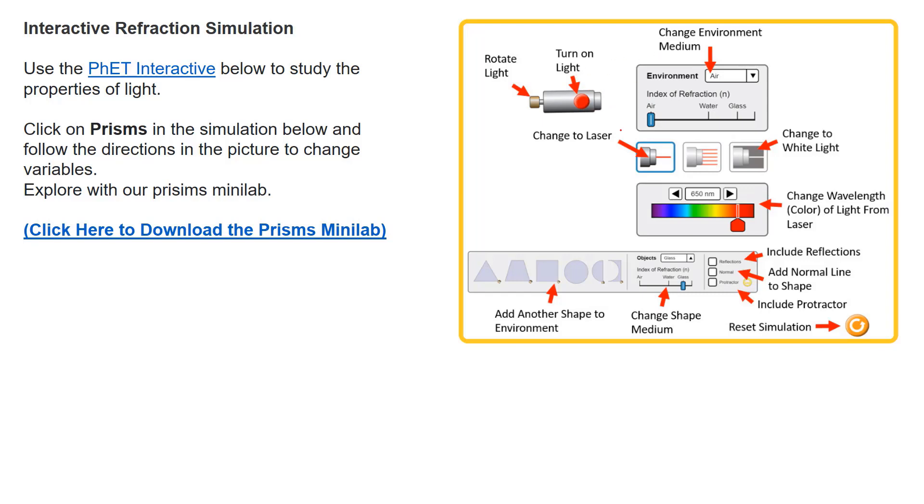So the actual PhET interactive is at the very bottom of my Stickman Physics page. And if you use the interactive, the picture right here, it'll tell you just the direction. So you can see, like, if I ask you to include reflections, you can click on this thing right here. If I ask you to have a normal line, which you want, so you can see how things are bending, you can add as many shapes as you want to the animation. It's kind of fun, you kind of get into it. And then I give you a little challenge in that mini lab as well.